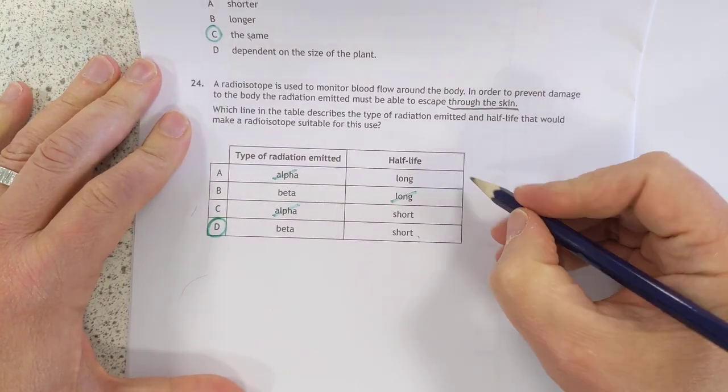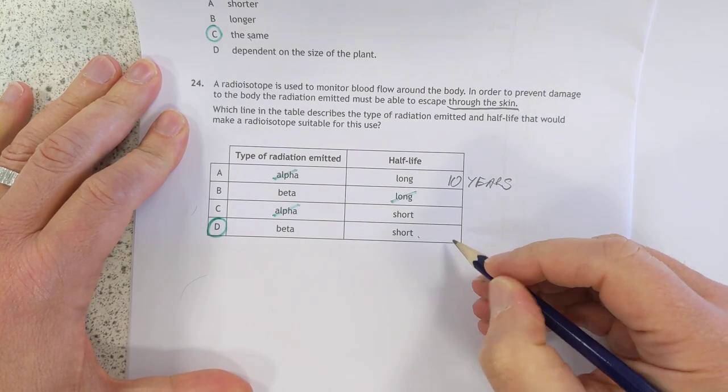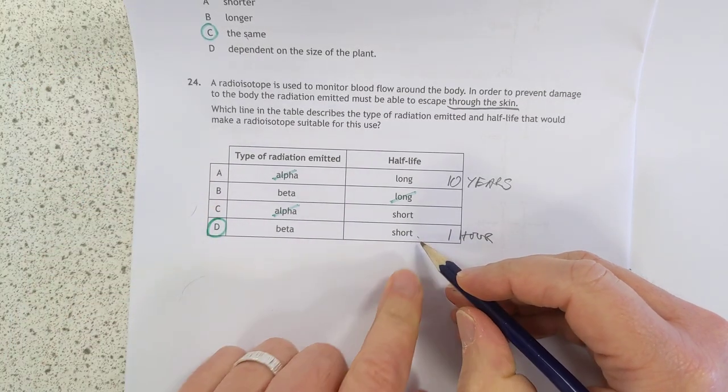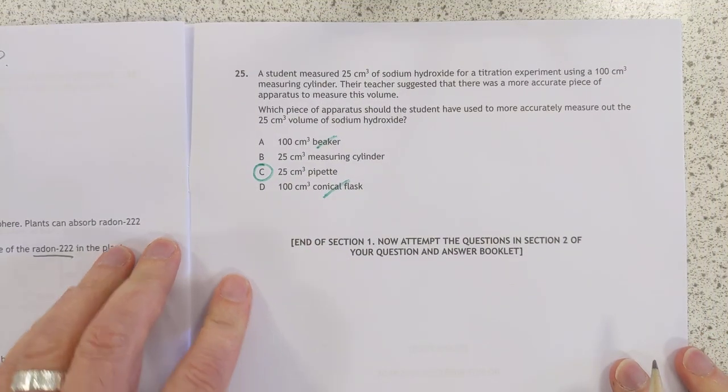If I was writing this question, I would have said like 10 years for a long half-life and say one hour for a short half-life, not microseconds, which you can also get for half-lifes. Stop complaining hey, and finish the paper.